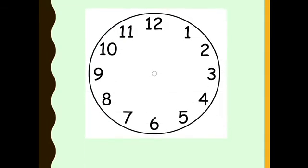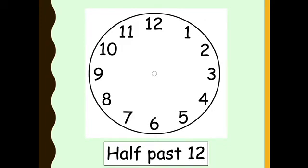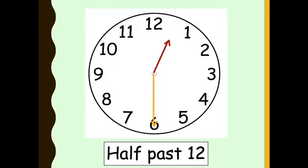Have a go at this one now. This one reads half past 3 — big hand goes on number 6 and the small hand has just gone past number 3. Let's have a look at the next one. This one is half past 12 — big hand goes on number 6 and the small hand has just gone between 12 and 1. That is half past 12.